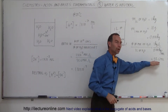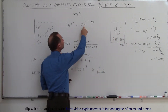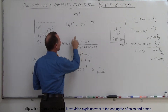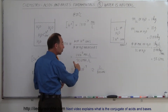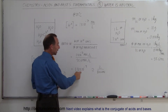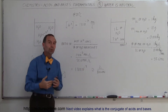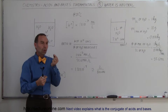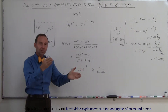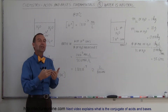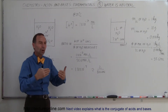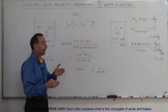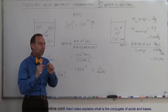If there are 55.6 moles of water and 1×10⁻⁷ moles of hydrogen ions in one liter, and we take the ratio of moles per liter of hydrogen ion divided by moles of water molecules per liter, that ratio is 1.8×10⁻⁹ — about 2 per billion. That means at 25 degrees centigrade, on average about two water molecules out of every billion will dissociate into hydrogen and hydroxide ions. That's a very small number.